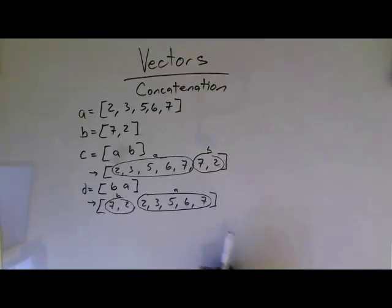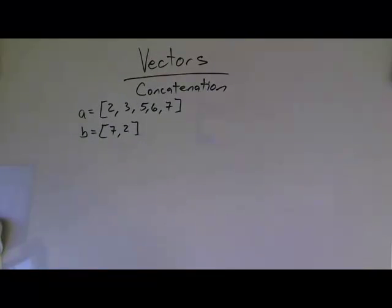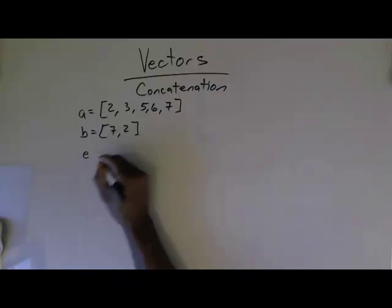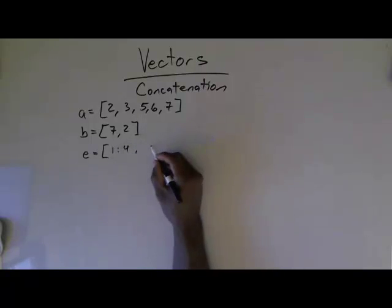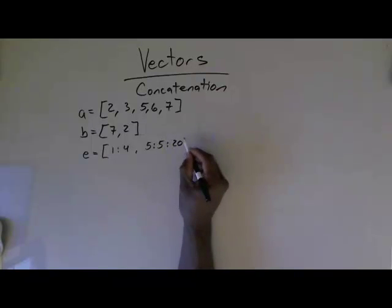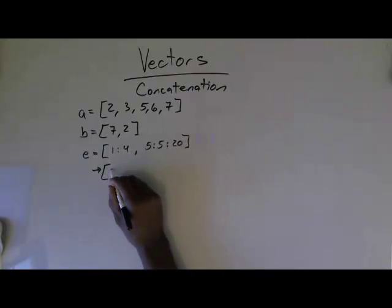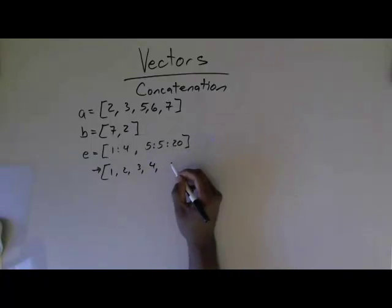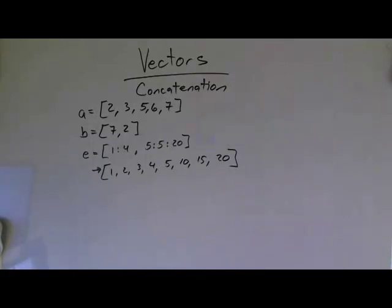So this can go on and on. You can also do something that looks like this. Let's say if I came back and said E equals the vector 1 colon 4 comma 5 colon 5 colon 20. Keep in mind, these are all vectors. So it's going to be 1 colon 4 is 1, 2, 3, 4. 5 colon 5 colon 20 is 5, 10, 15, 20. You can do it with linspace in there. It's just all it is is sticking vectors together.